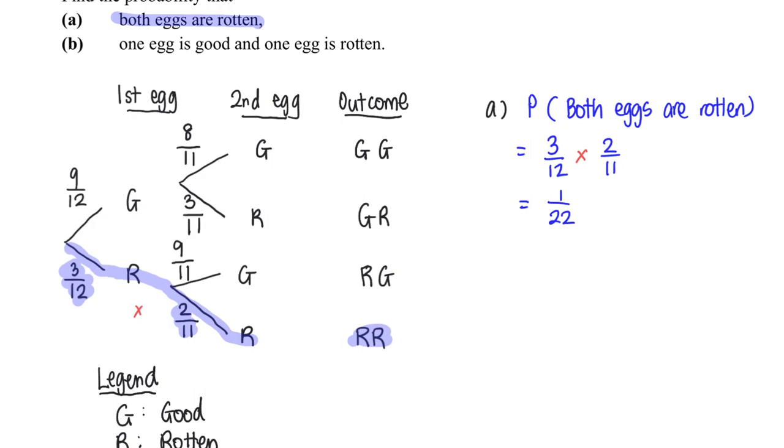Part B. Probability that one is good and the other is rotten. So it's either this or this. So later on, I will then need to add these two probabilities together.